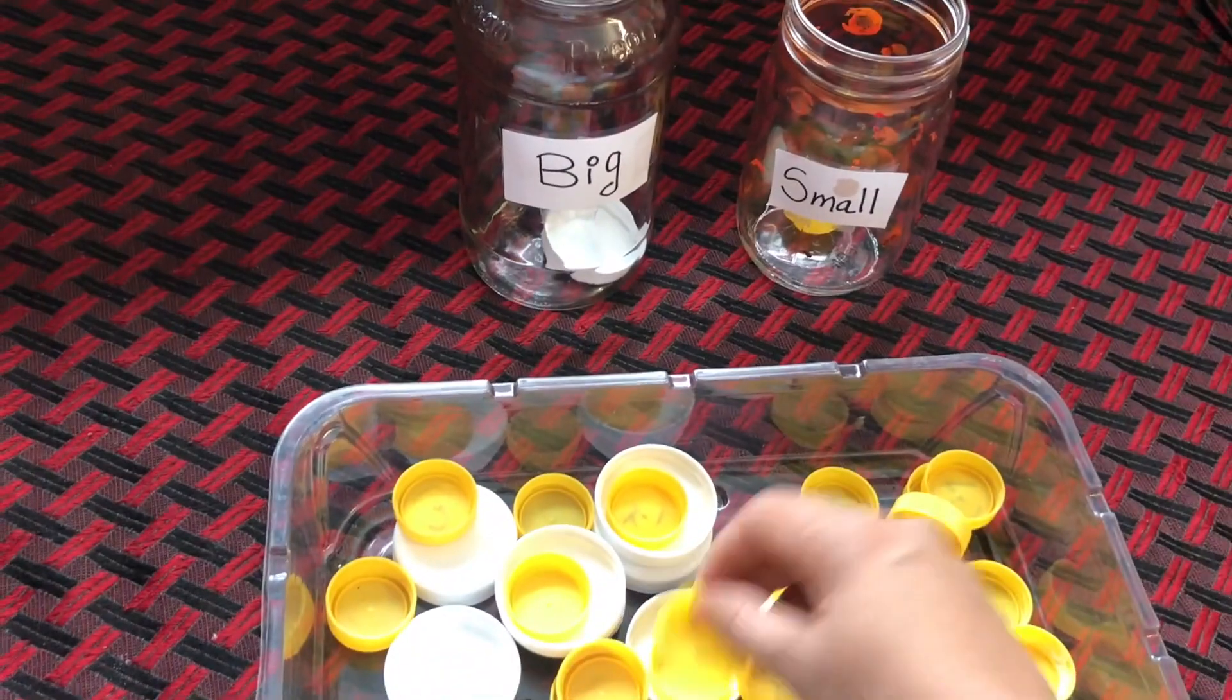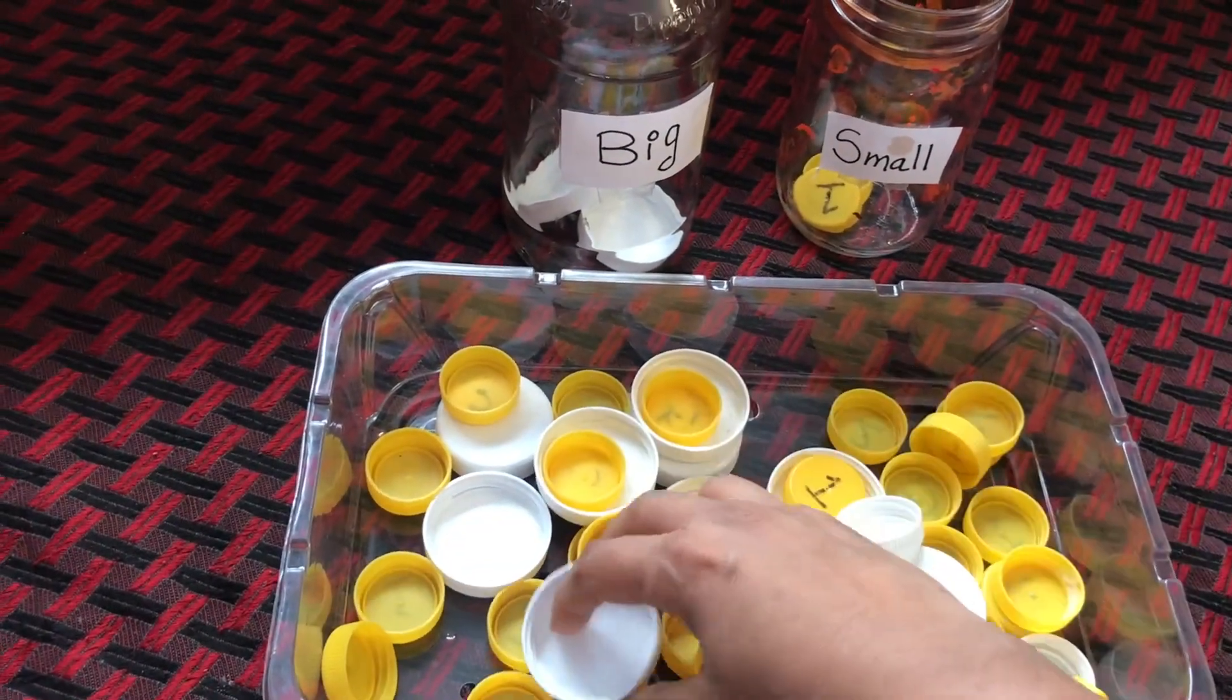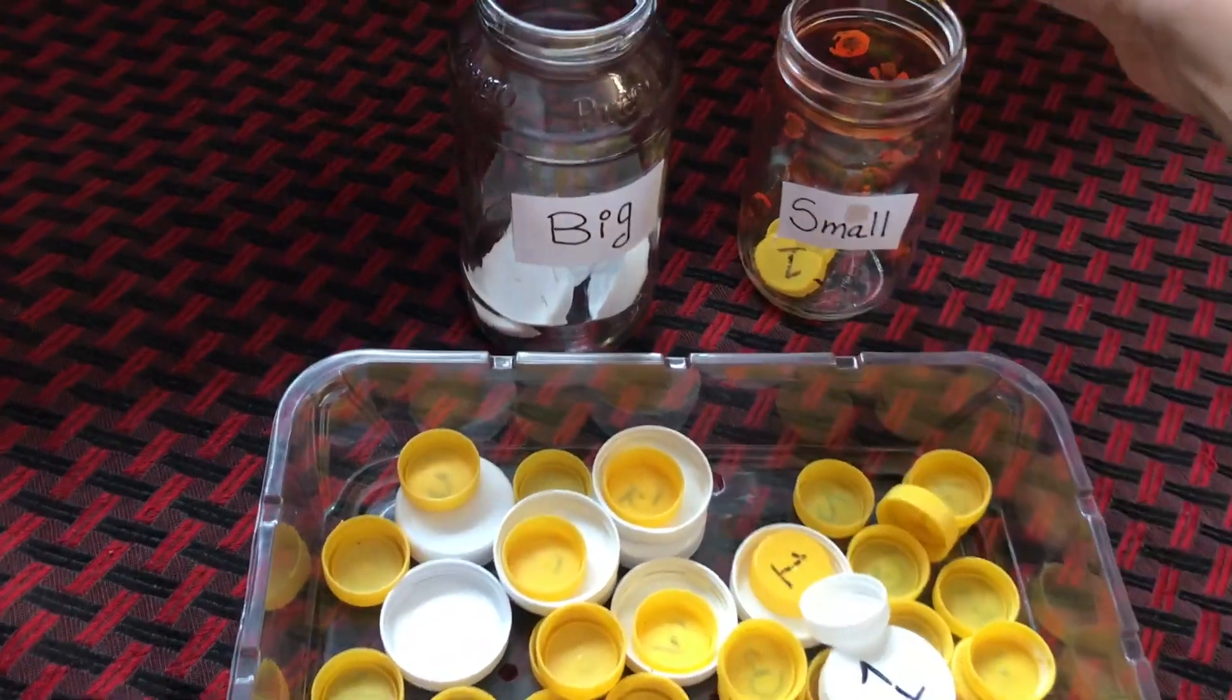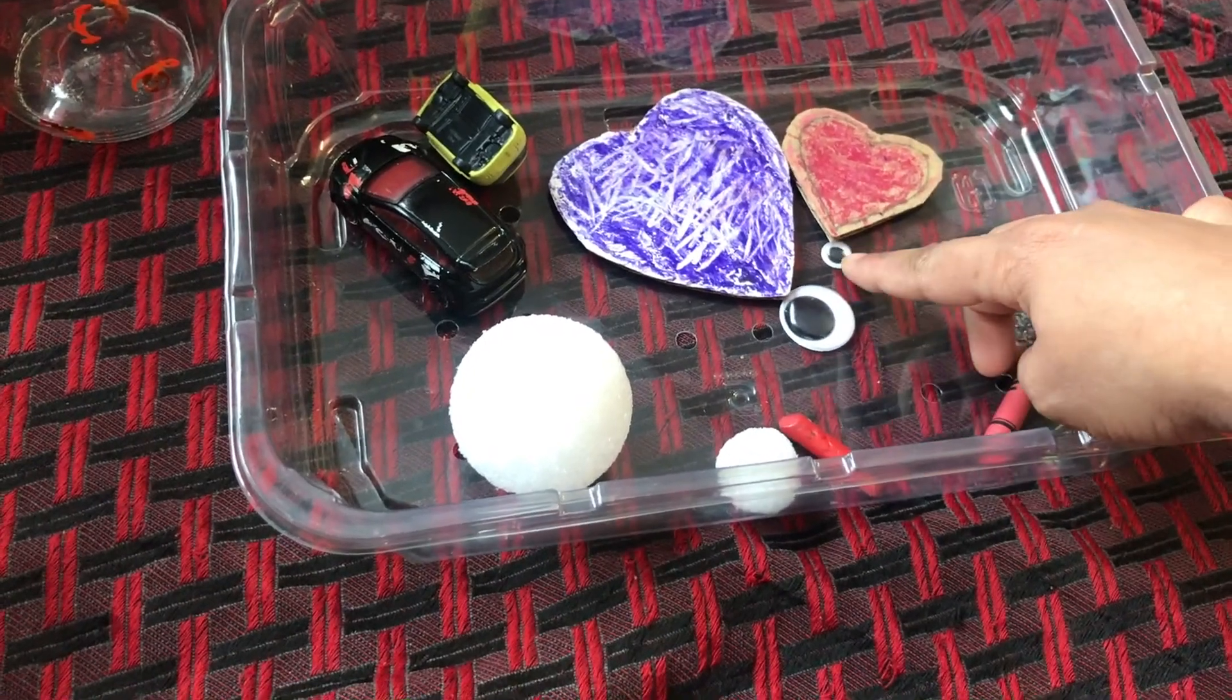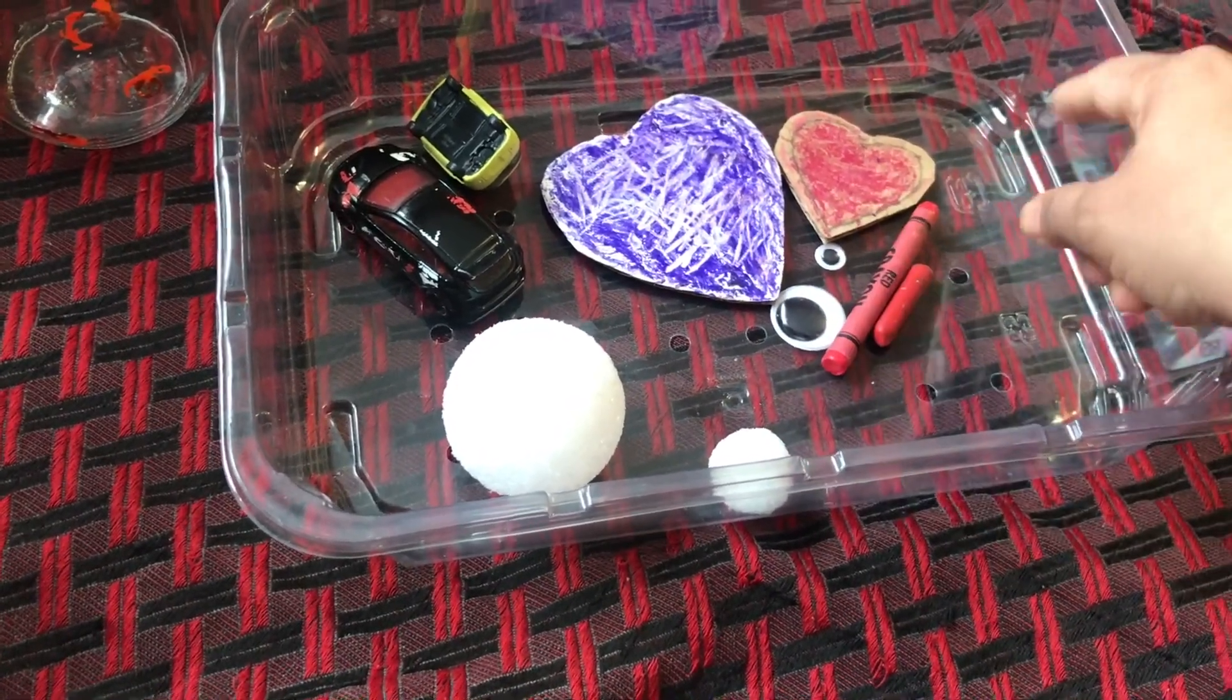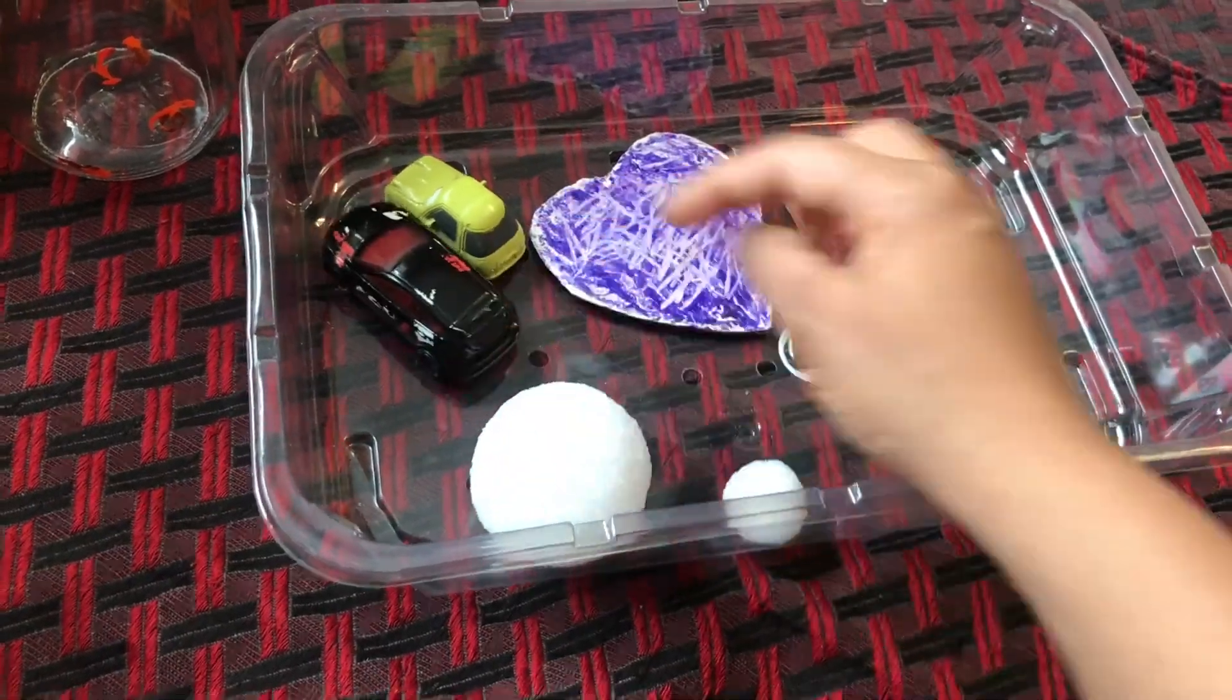You can give different sizes of milk bottle caps and ask learners to put big milk bottle caps into the bigger jar, smaller into the smaller. To add a little bit more challenge, we can give some mixed up things to sort out. We can give whatever is available at home. Here I am showing some of the examples.